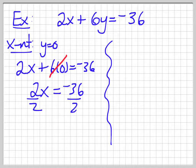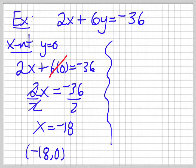So, 2x is equal to negative 36. Divide both sides by 2. 2's cancel. I'm left with x is equal to negative 18. So, I'm at negative 18 and 0.